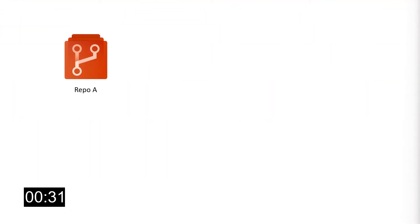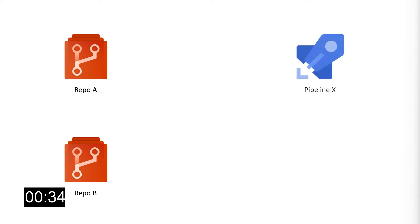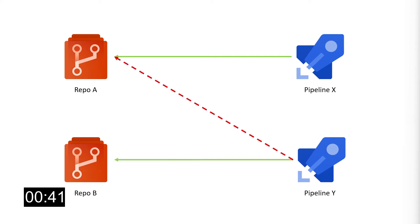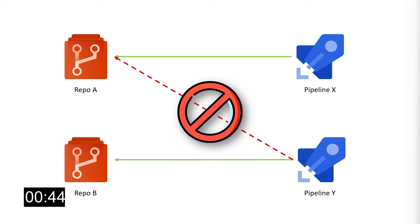This is where you may want more control — deciding which pipelines can access which repository. For example, let's say you have two repositories A and B in the same project and two pipelines X and Y that normally build these repositories. You may want to prevent pipeline Y from accessing repository A, and in general you want the contributors of A to control which pipelines they want to provide access to. As a contributor of repo A, you can now add checks and pipeline permissions to your repo to control this behavior.